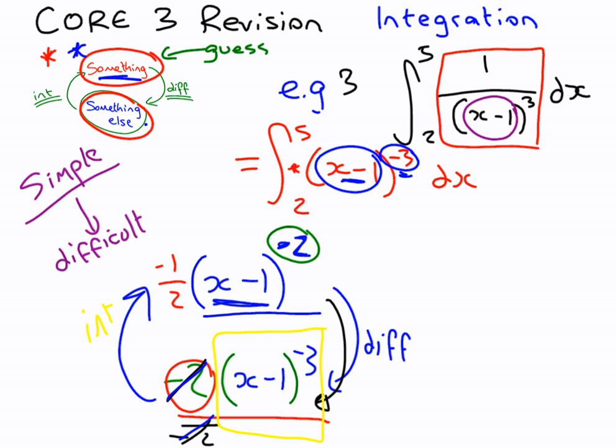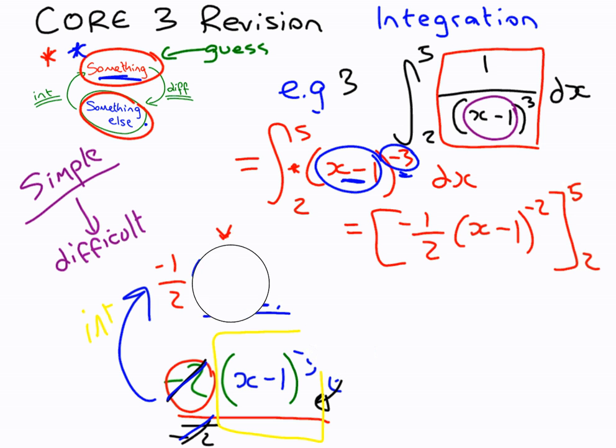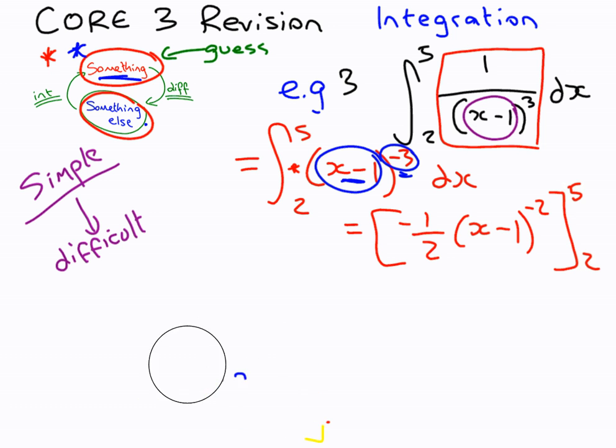Now we still have limits to do so. It's not over yet. So we're integrating, and we get this answer here. Minus 1 half, x minus 1 to minus 2, between the limits 5 and 2. We do have a calculator for core 3. It's just the rays are working out. So let's do our first, our biggest limit first.